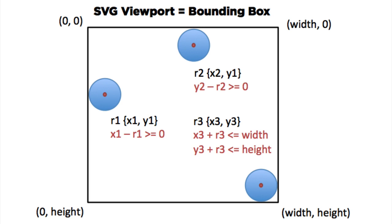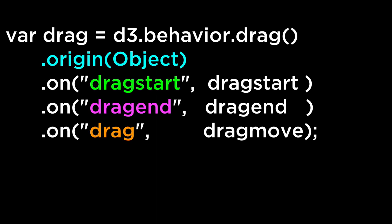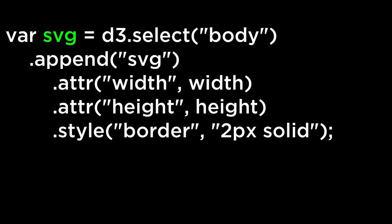Let's go piece by piece and explain the code of the example. First, we define the height and width of the SVG container and the radius of the SVG circle elements we will create. Then we define the D3 drag behavior, specify the origin accessor, and define the three event types we want to listen to with their corresponding event listener functions. They are named in a self-documenting way: the drag start event triggers the drag start function, the drag end event triggers the drag end function, and the drag event triggers the drag move function. Next, we append the SVG viewport to the HTML body and define its width, height, and border. This will also serve as the bounding box for the circle dragging.